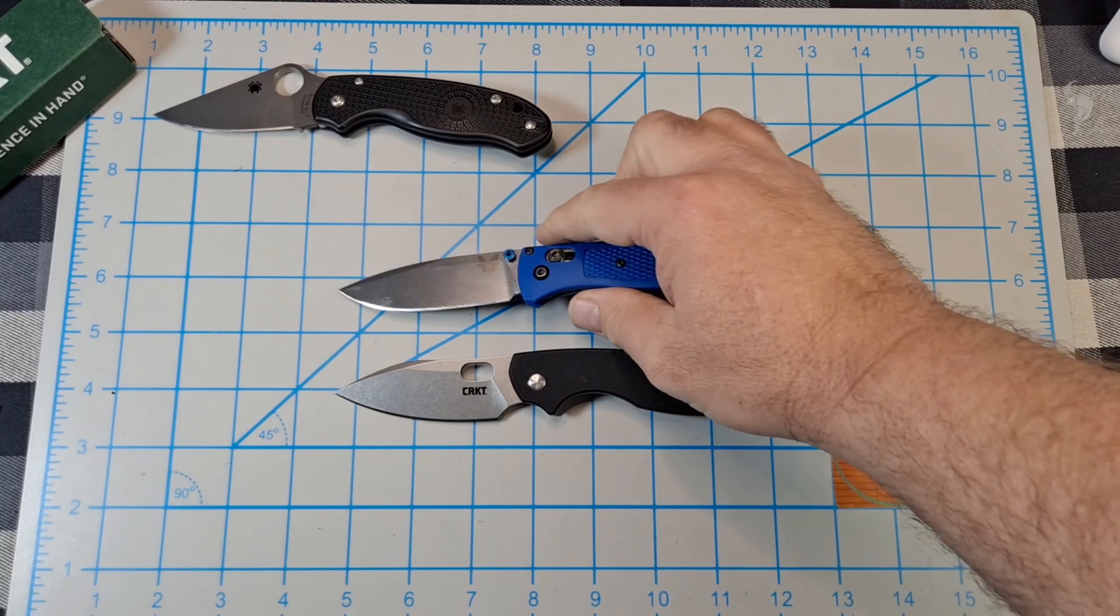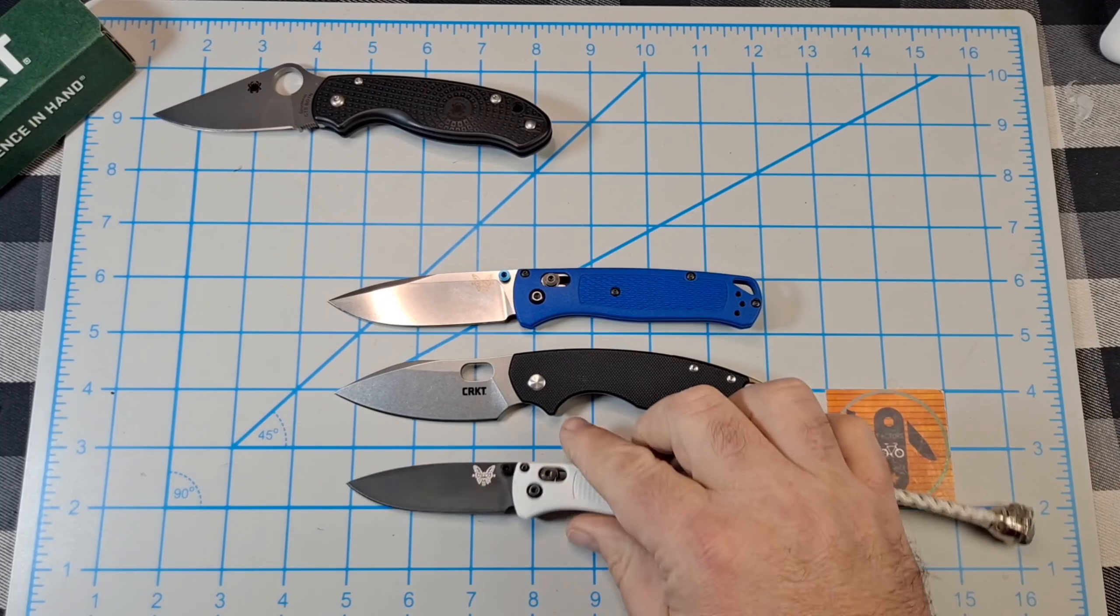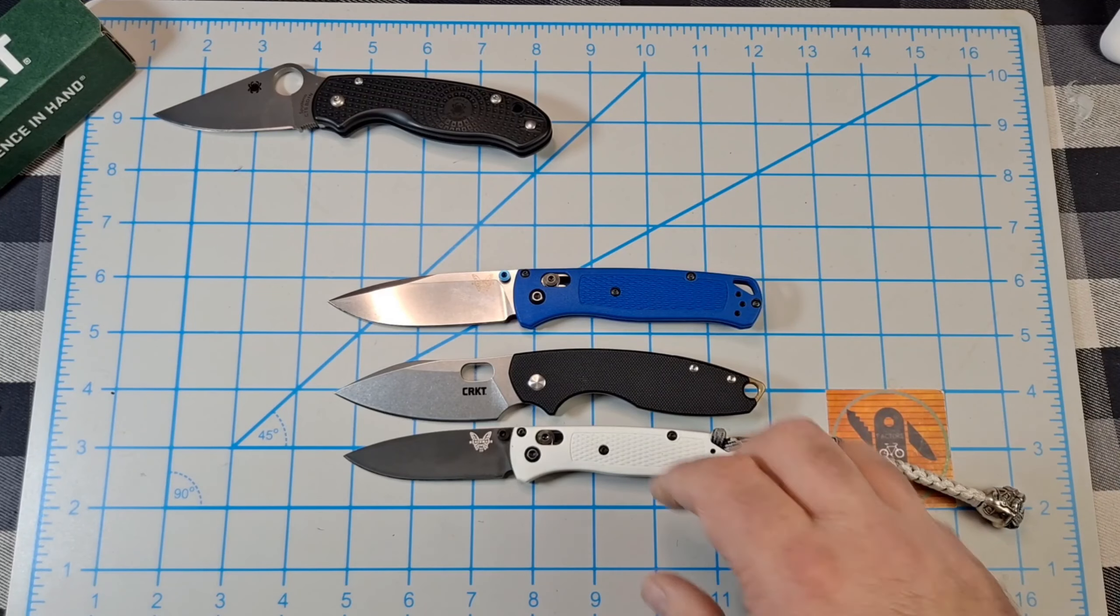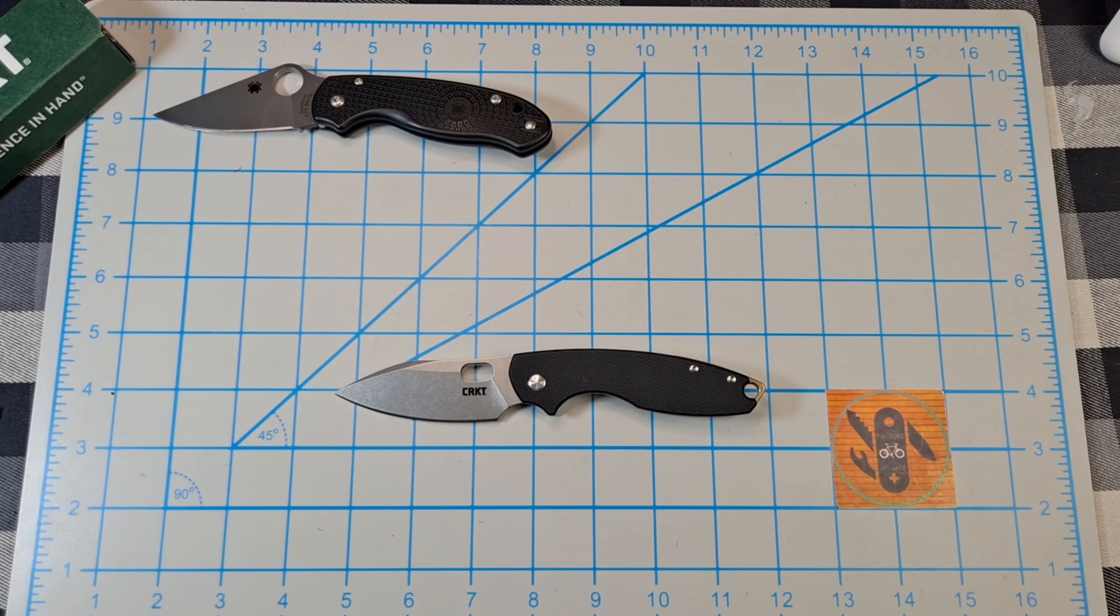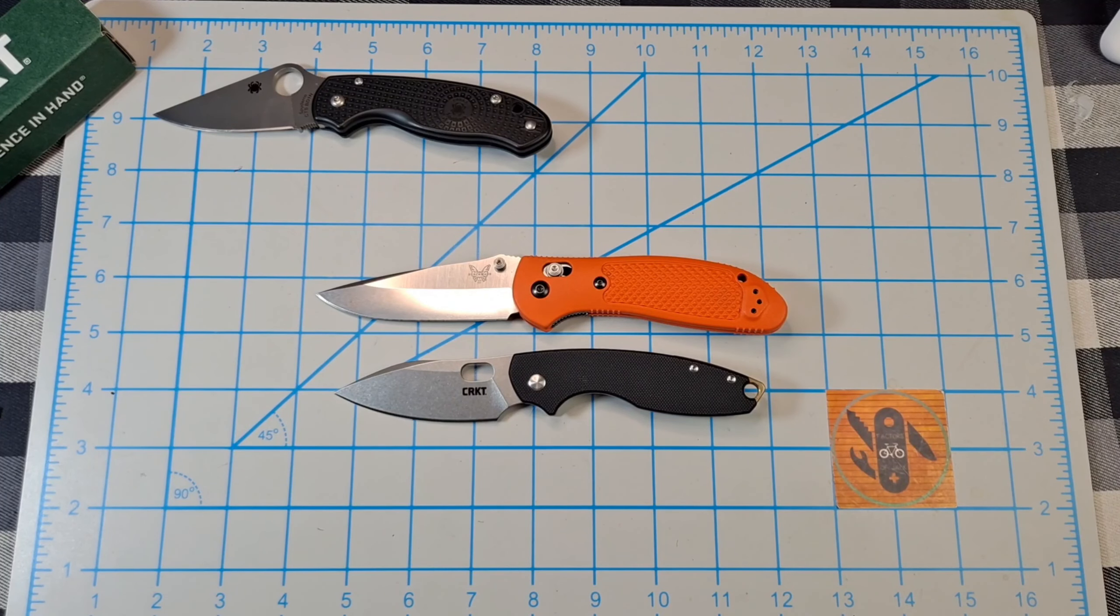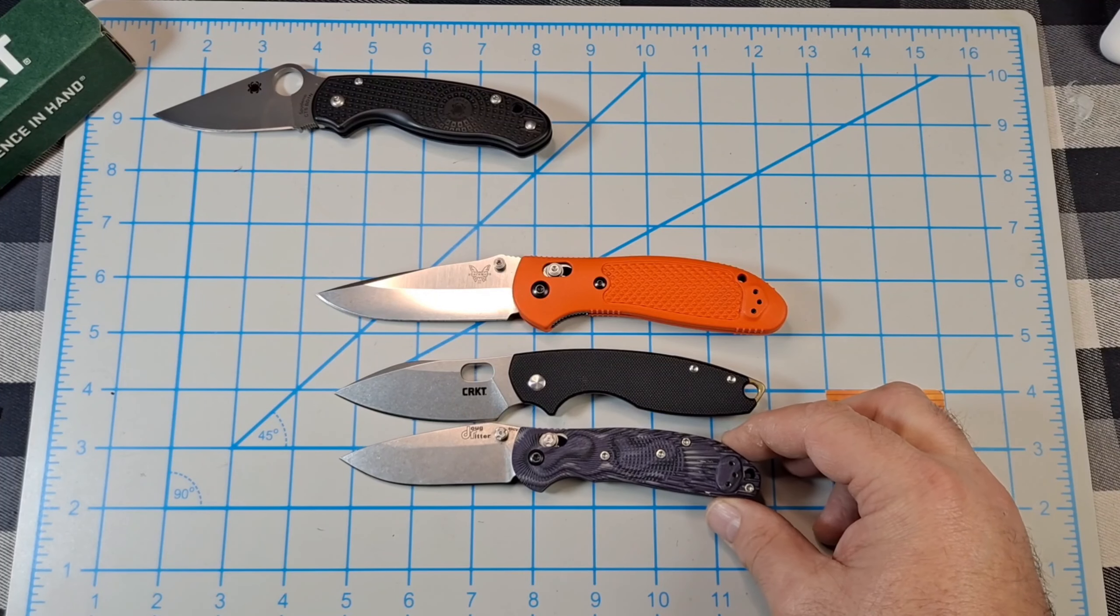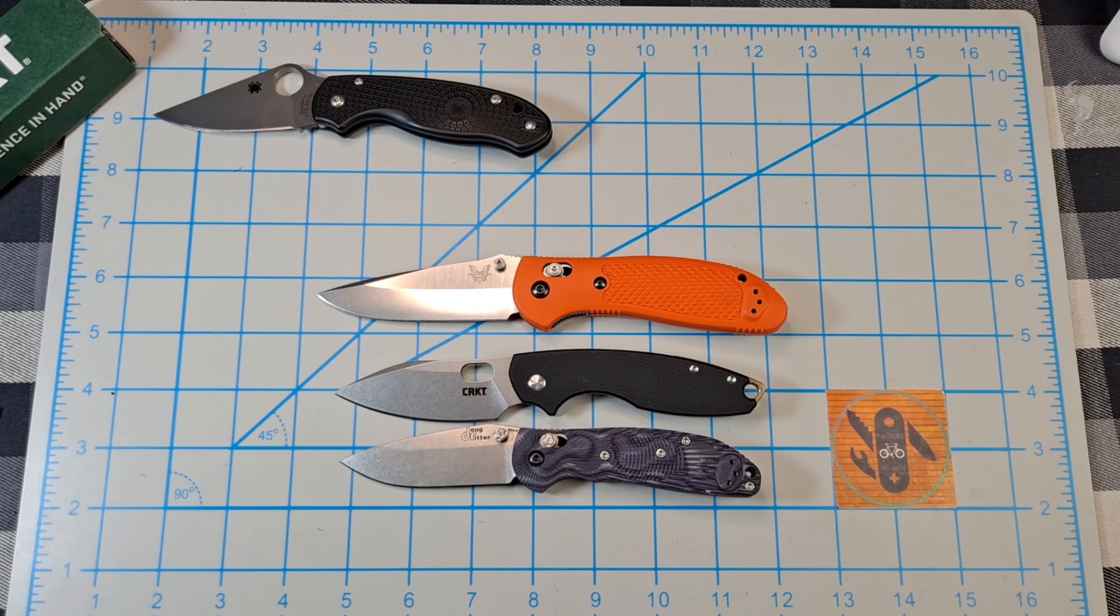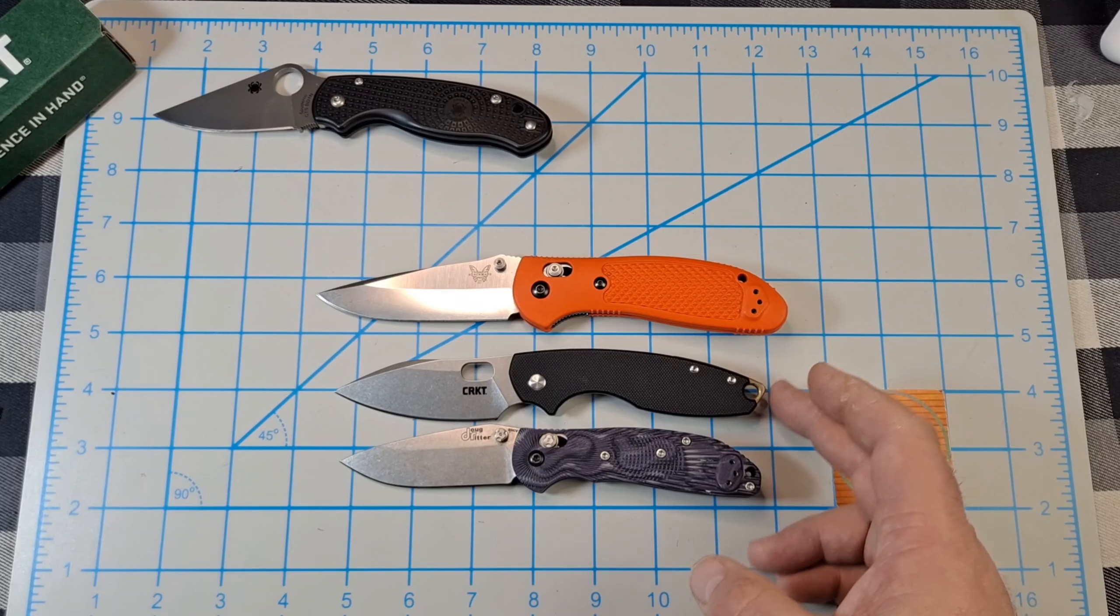Got the full-size Benchmade Bugout - the Bugout's a little longer. Got the Mini Bugout. So it falls right between the full-size Bugout and the Mini Bugout. And here's the full-size Hogue Ritter Mini RSK. They're pretty close too. Got a little longer blade on the Pilar 3. Handle, including this lanyard hole backspacer, is a little bit longer.